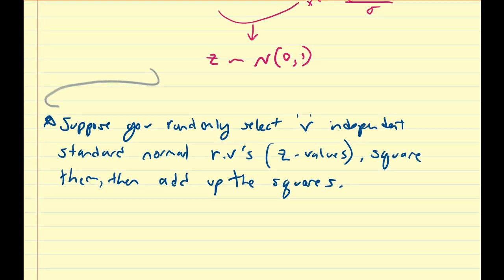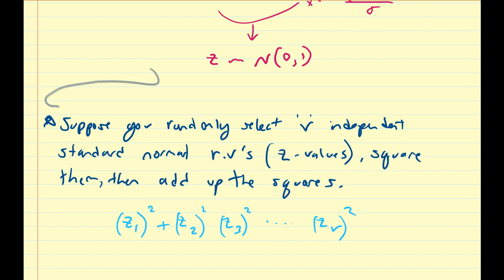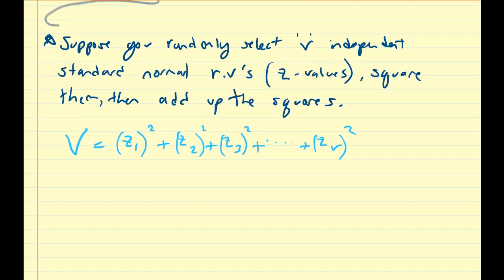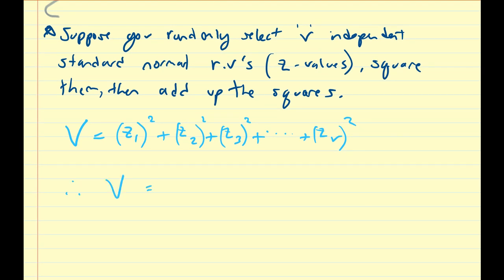So that is, if we select, say, three z-scores, that means we're going to have z1, z2, z3, and we could even select more if we want to — let's call it z_nu for the last one. Once we have these values, we're going to square them and then add them up. We're going to define this sum to be equal to another random variable v. So we can represent v as the summation from k equals 1 to nu of z_k squared.